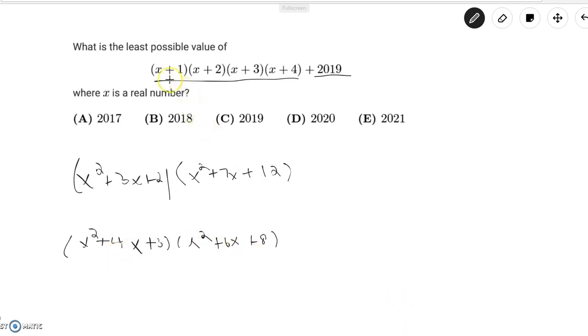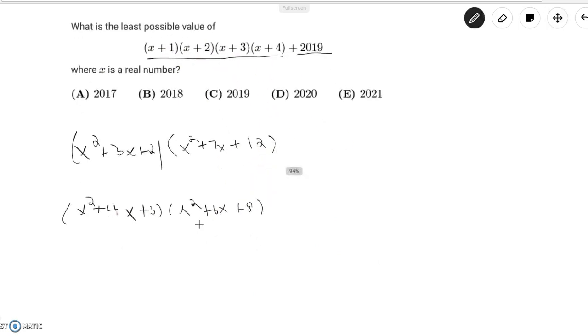But if we take the first one and the last one, and we take the second one and the third one, then we'll get (x²+5x+4)(x²+5x+6).